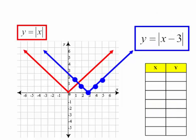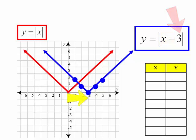Now notice, I had y equal to the absolute value of x minus 3. But remember, x minus is part of the formula. Our h is actually a positive 3. And sure enough, my graph did move to the right 3 units.